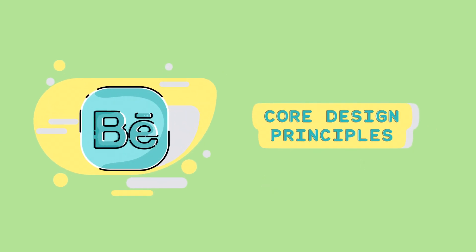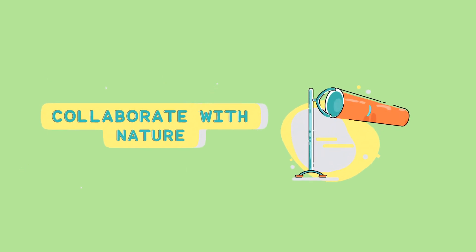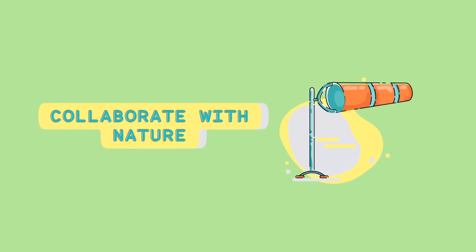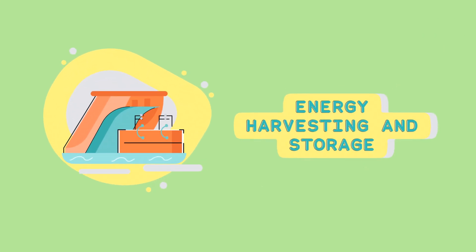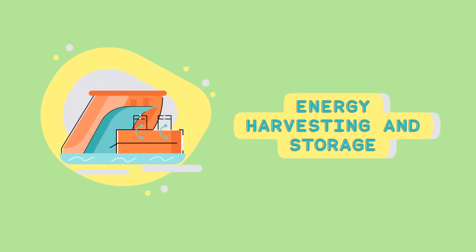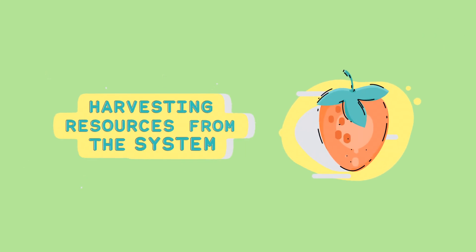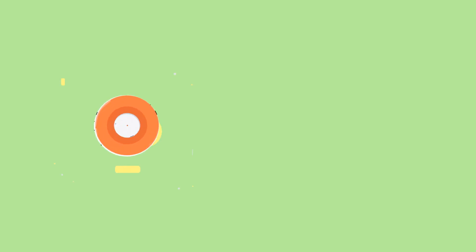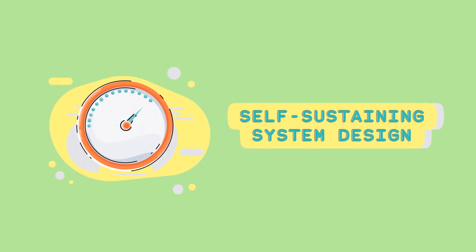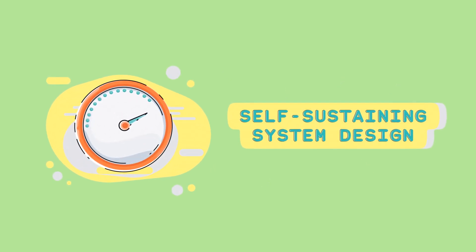Design Principles. Observe and interact: carefully observe natural systems and work with them rather than against them. Catch and store energy: harness and store energy from the sun, wind, and water for later use. Obtain yield: produce food, energy, and other resources from the system. Self-regulation: design systems that are self-sustaining and can regulate themselves.